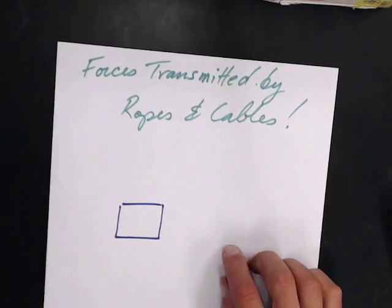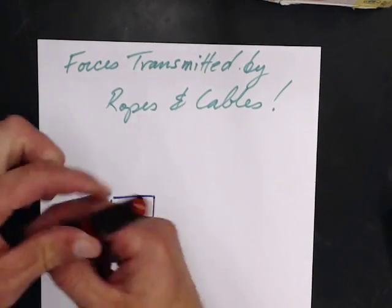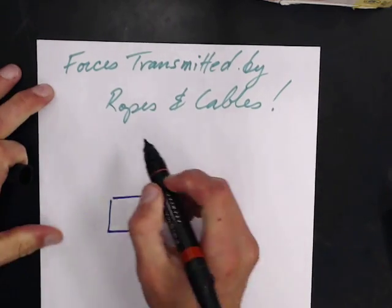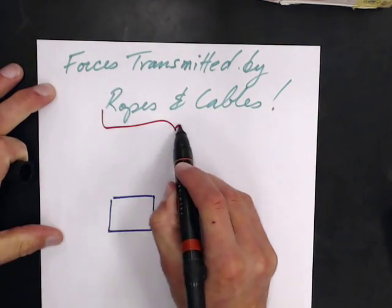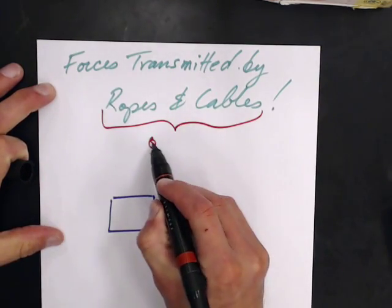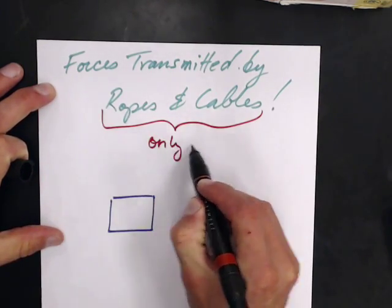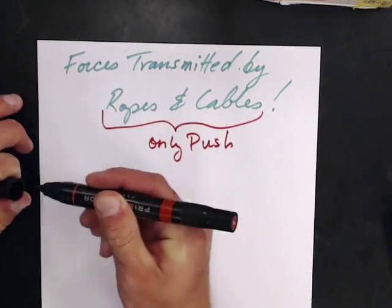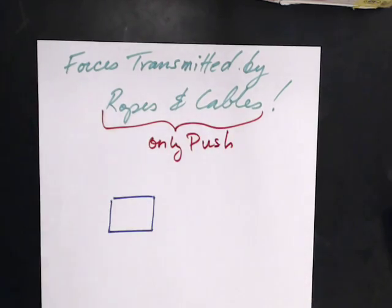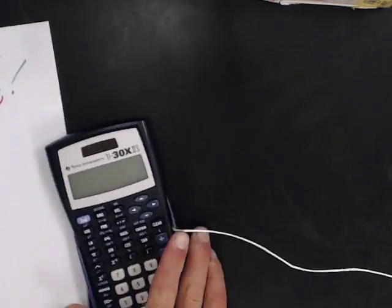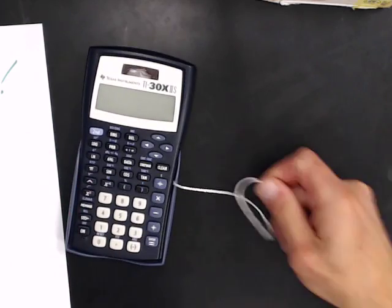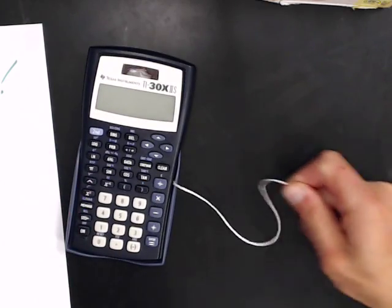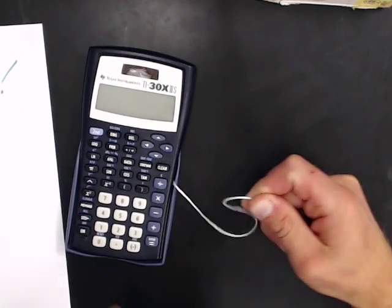Force is transmitted by ropes and cables first. Ropes and cables only pull. Here's my calculator — let's try to push it with the rope. Ropes can't push.